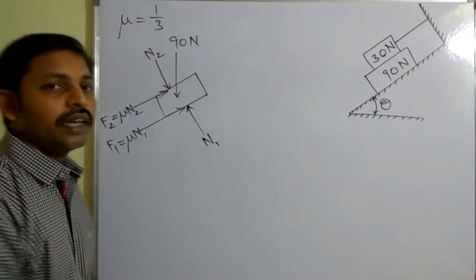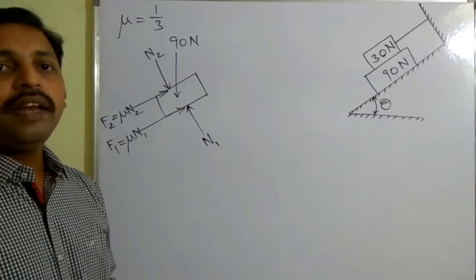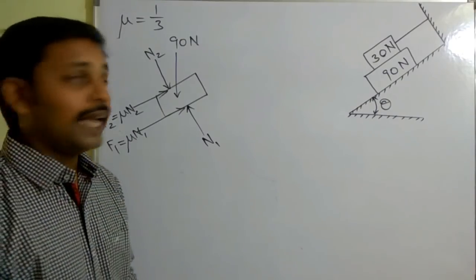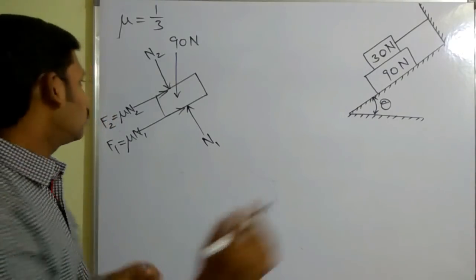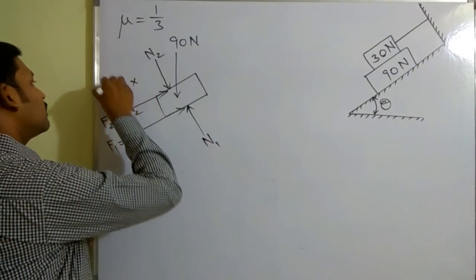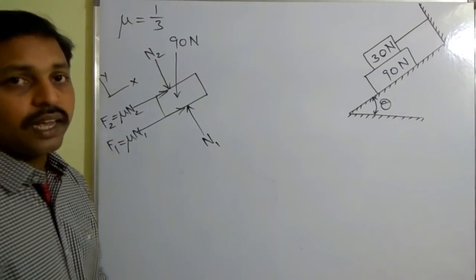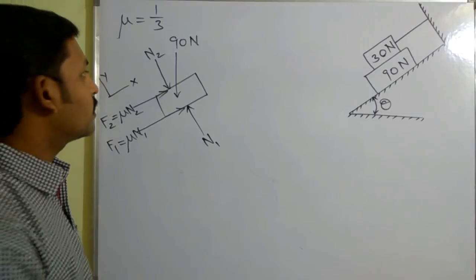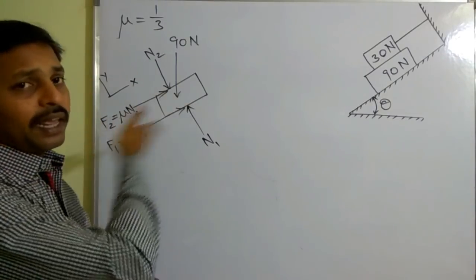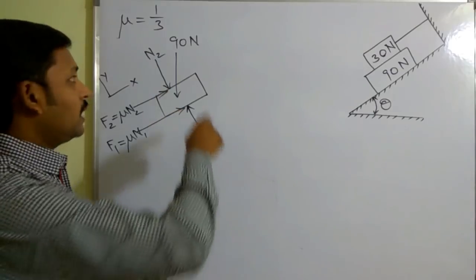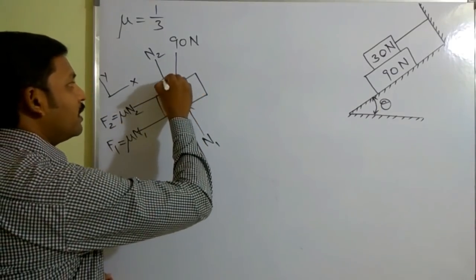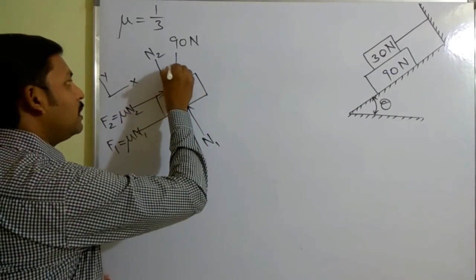All forces are either along the plane or perpendicular to the plane, except the 90 Newton force. The X axis is parallel to the plane and the Y axis is perpendicular to the plane. All forces are along the plane or perpendicular to it, except the 90 Newton weight.